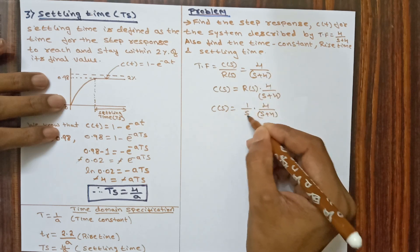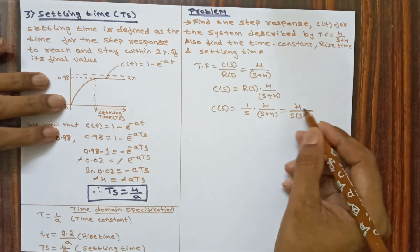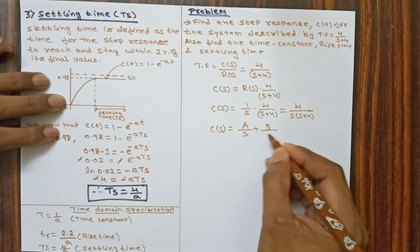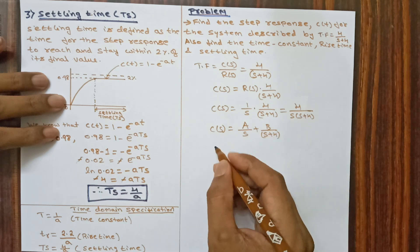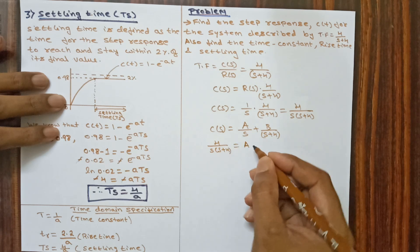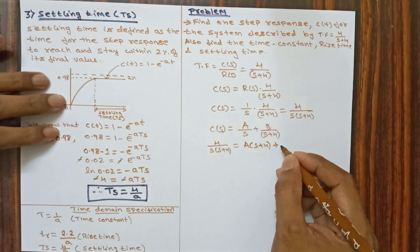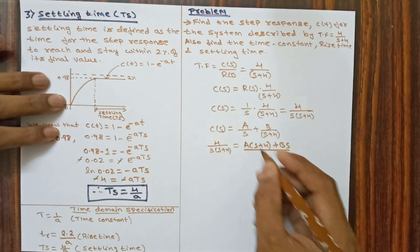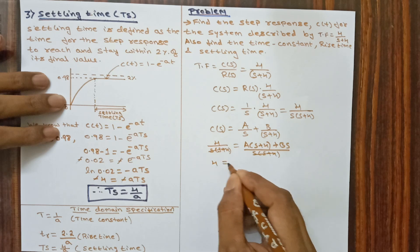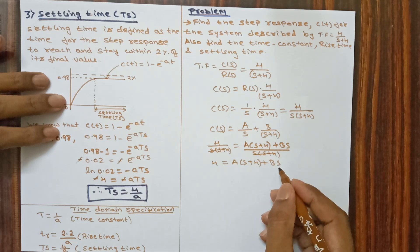Substituting R(s) equals 1 by s, we get C(s) equals 4 divided by s(s plus 4). Applying partial fractions: C(s) equals A divided by s plus B divided by (s plus 4). Multiplying through: 4 equals A(s plus 4) plus Bs.